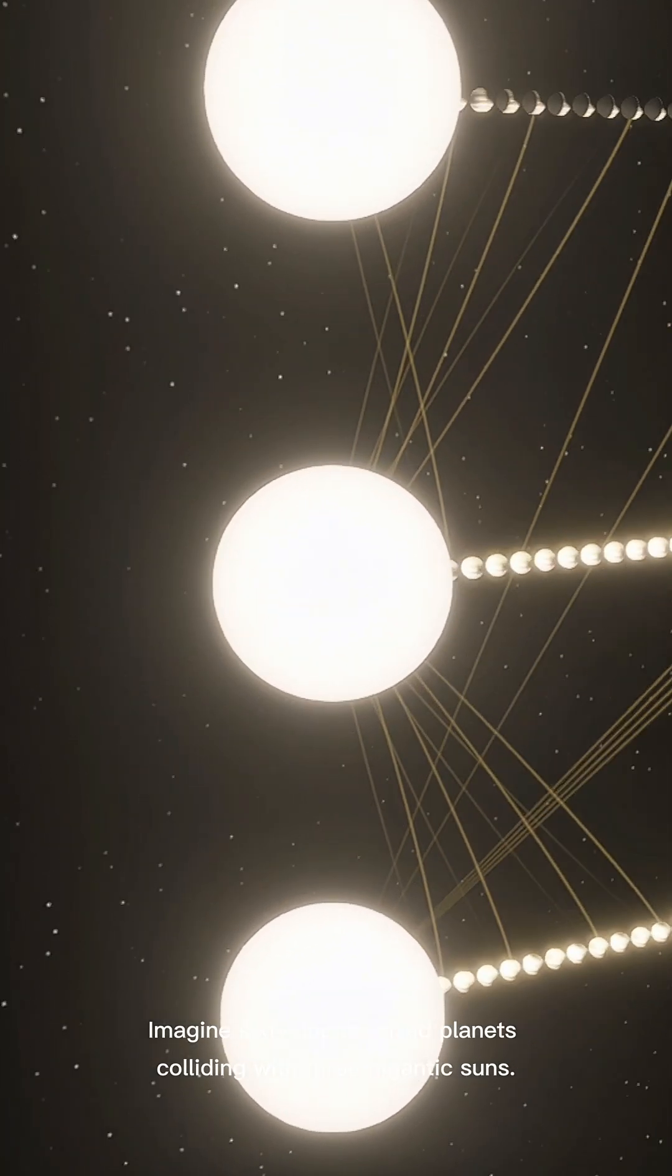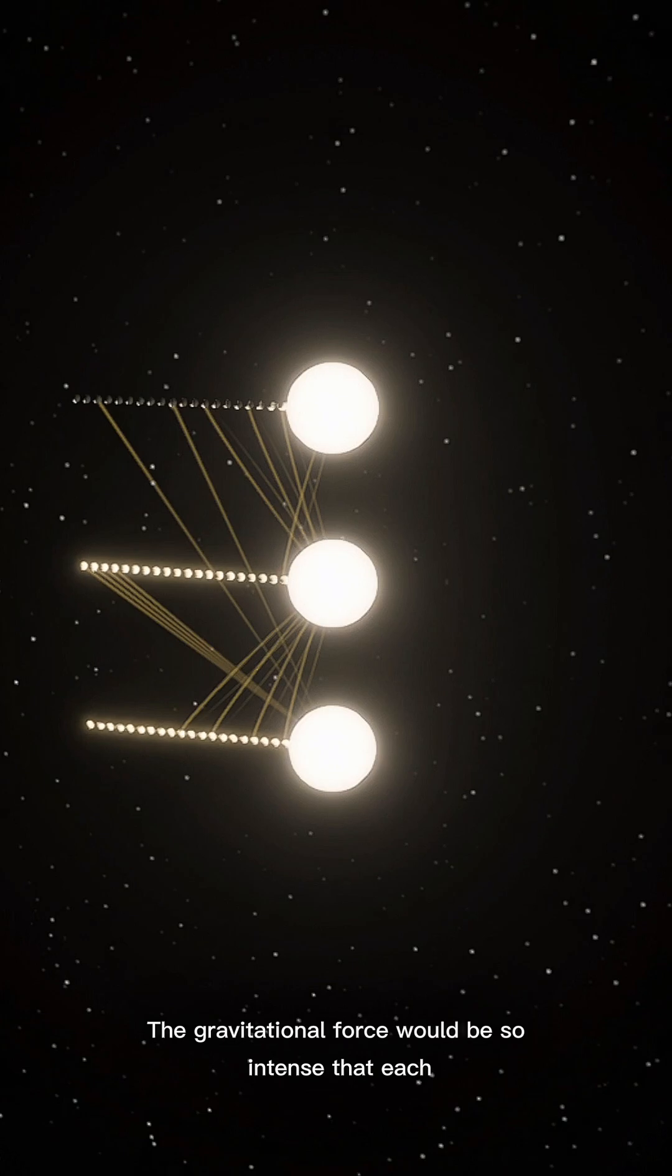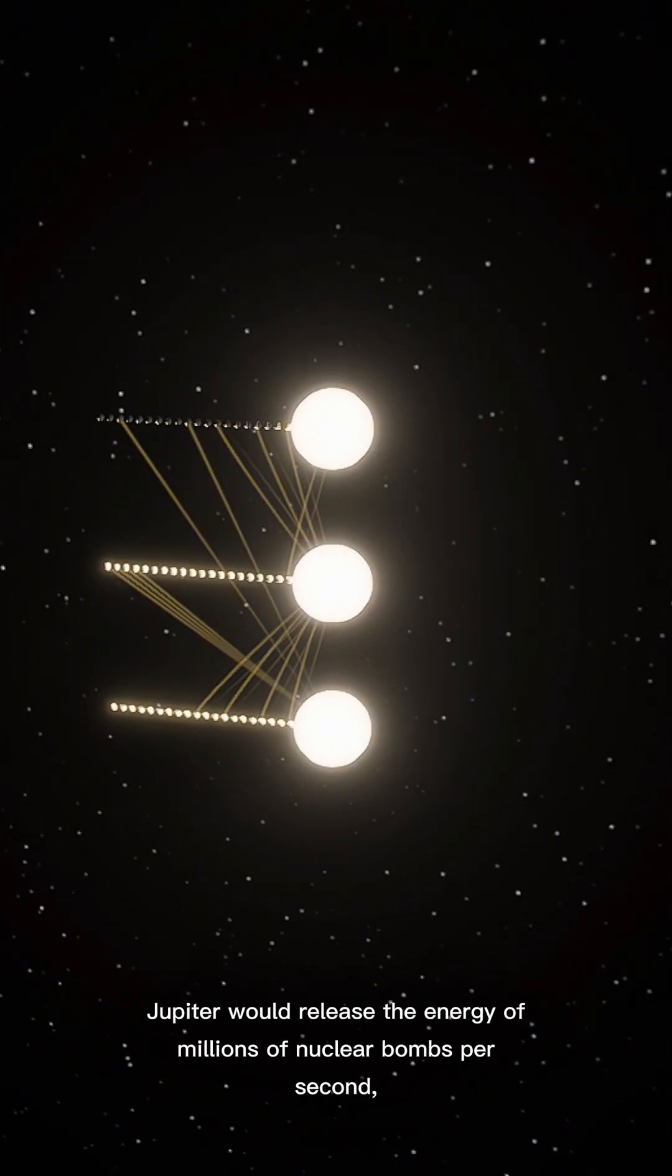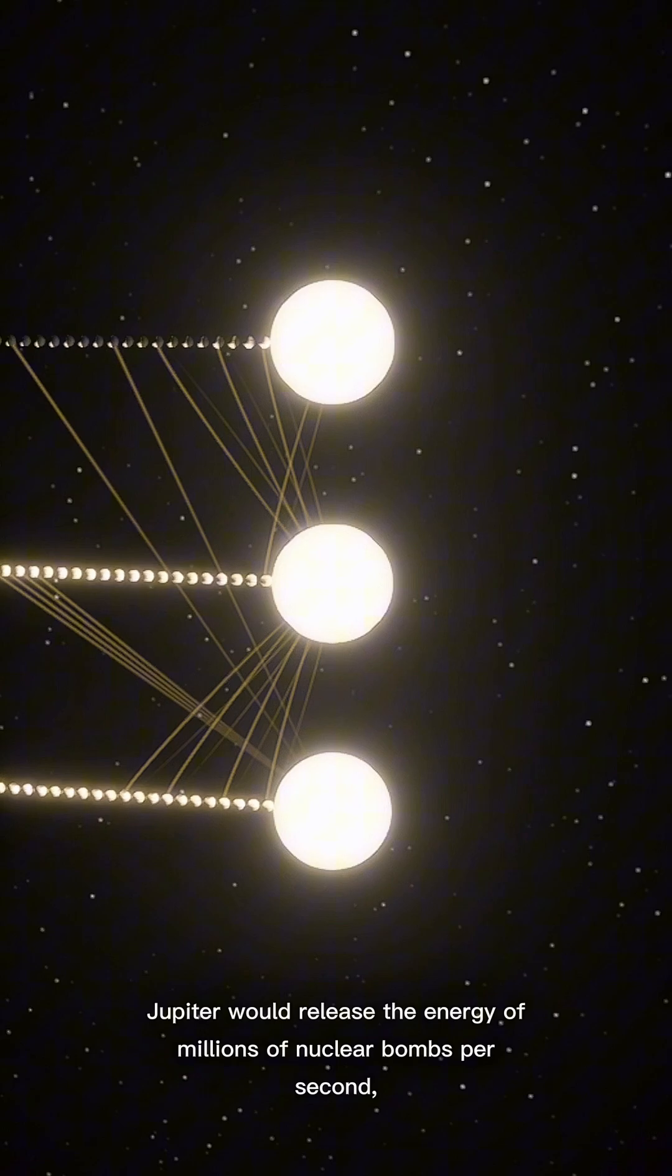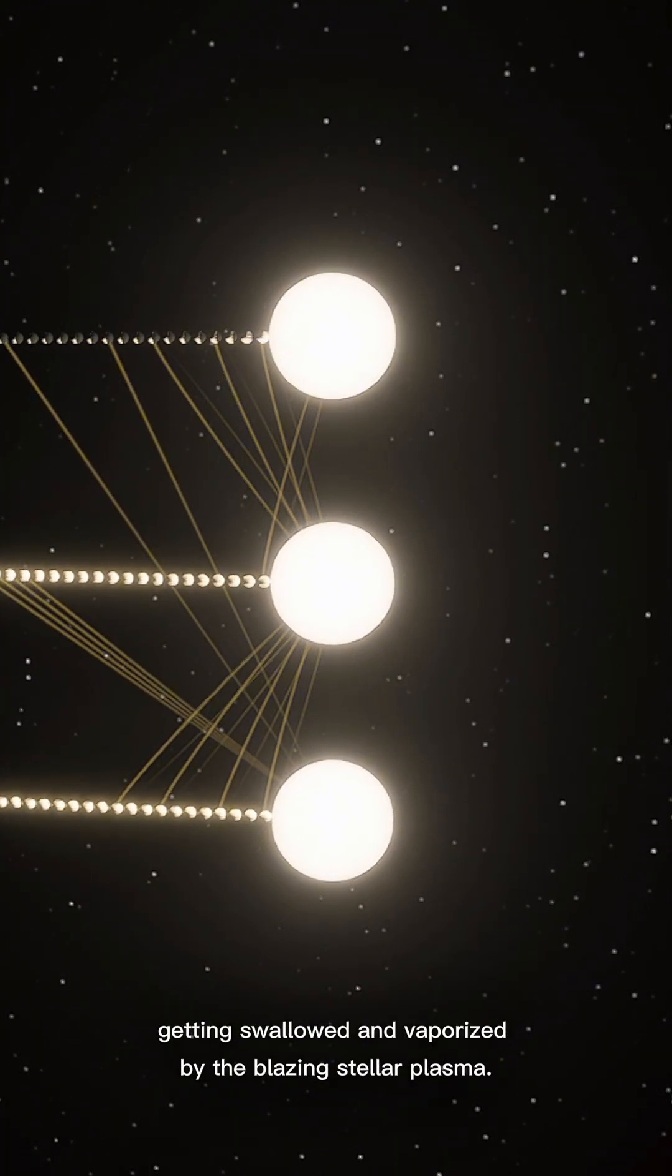Imagine 60 Jupiter-sized planets colliding with three gigantic suns. The gravitational force would be so intense that each Jupiter would release the energy of millions of nuclear bombs per second, getting swallowed and vaporized by the blazing stellar plasma.